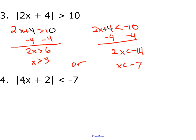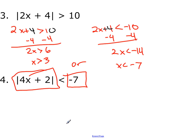Number 4. When is the absolute value of a number going to be less than a negative number? This one is the easiest type: no solution. That's never going to work — you're never going to have an absolute value of a number less than a negative number, because the absolute value makes everything positive. Watch out for that; it's kind of a trap question.